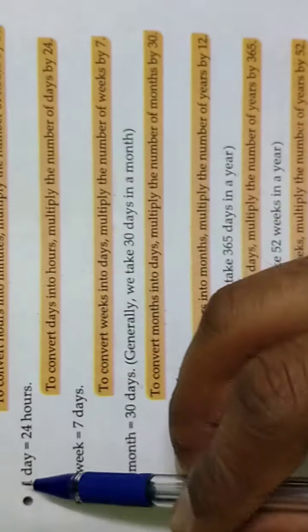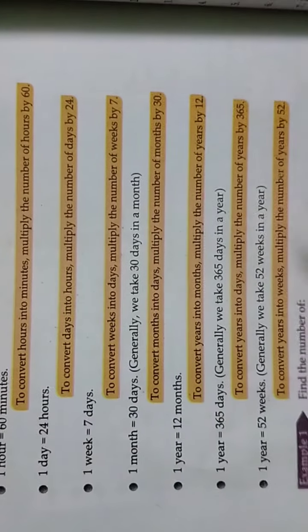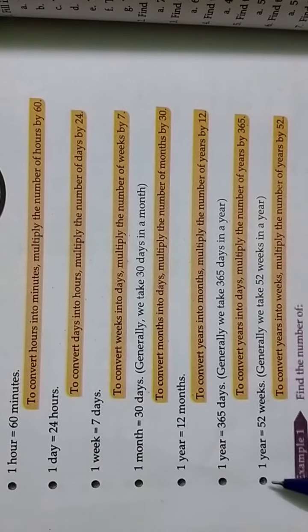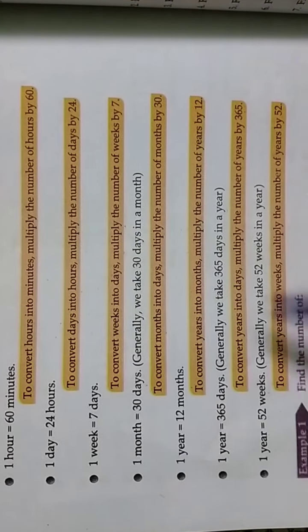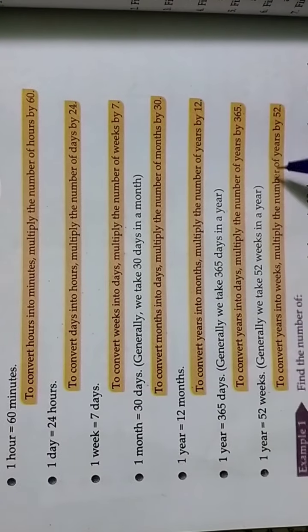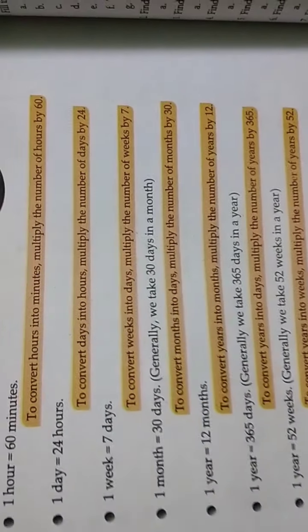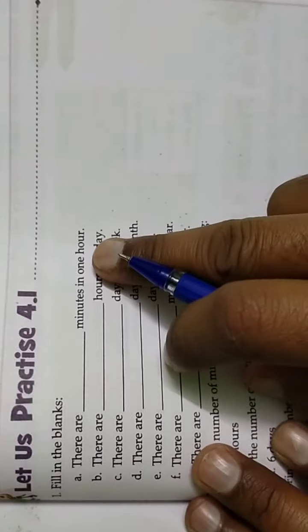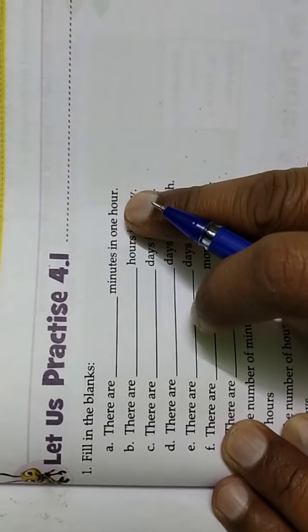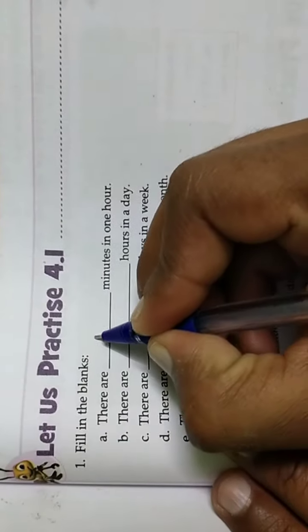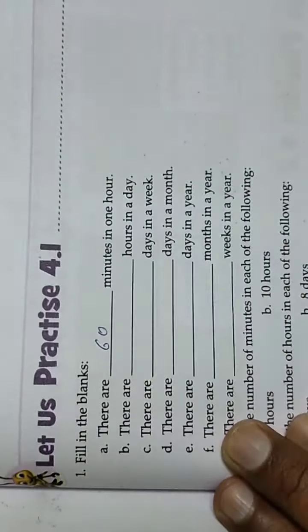This is a very important chart which I was telling you about. You have to complete it in your fair copy before starting the exercise. Now let's start Exercise 4.1. There are blank minutes in 1 hour — how many minutes are in 1 hour? 60 minutes.